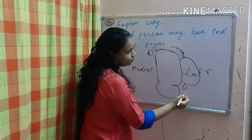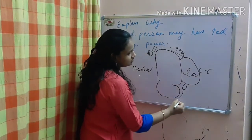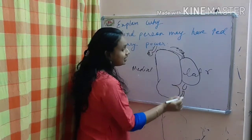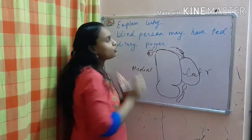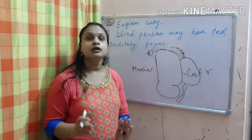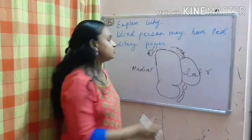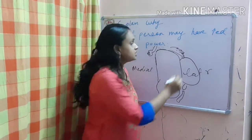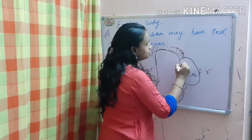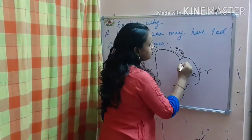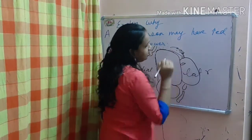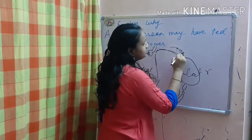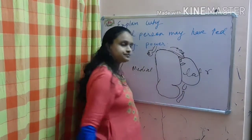The tongue and larynx have more area of representation. The area of tongue and larynx in the sensory cortex is more than the total area occupied by the lower limb, because they have more touch receptors. Now, suppose this part is representing the eye and this part is representing the ear.